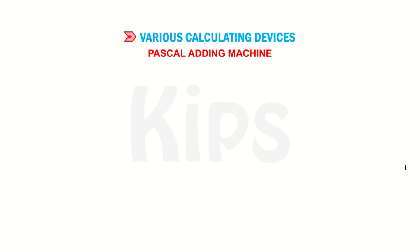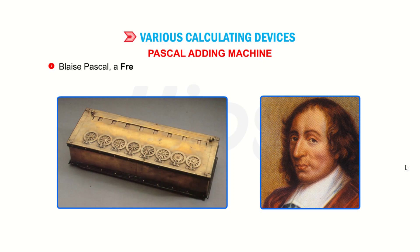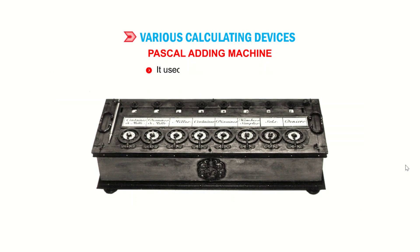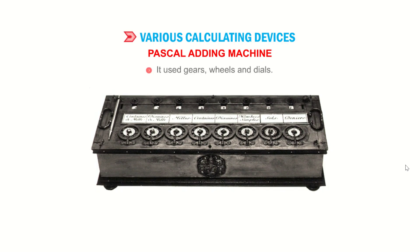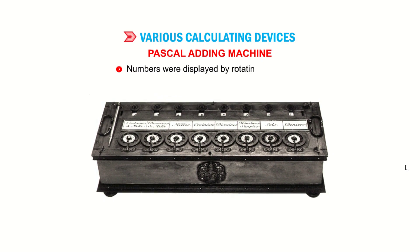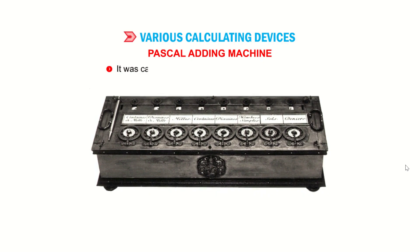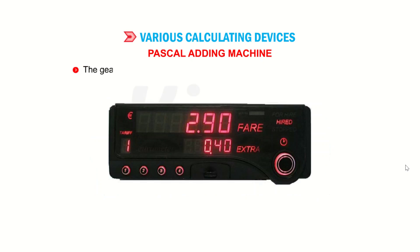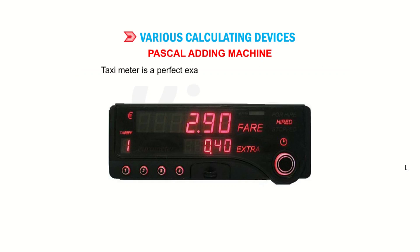Pascal's Adding Machine: Blaise Pascal, a French mathematician, invented an adding machine called Pascal's Calculator at the age of 19 in the year 1642. It used gears, wheels and dials. Numbers were displayed by rotating the wheels. It was capable of performing addition and subtraction. The gear principle was further employed in many mechanical calculators. The taxi meter is a perfect example of a mechanical calculator.